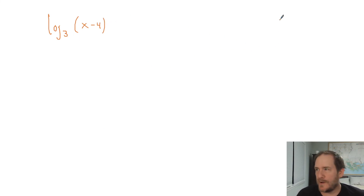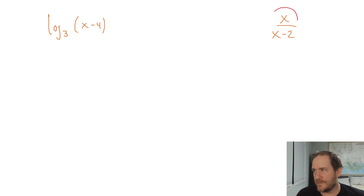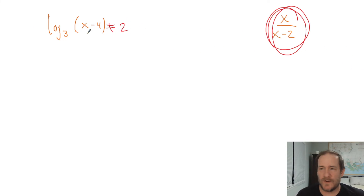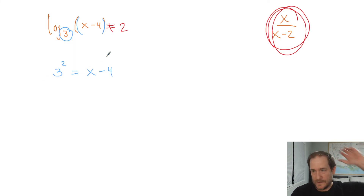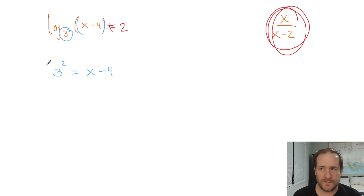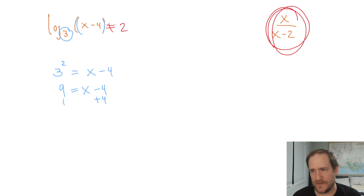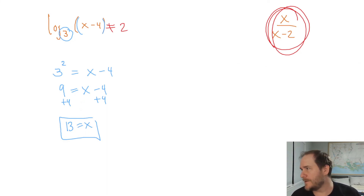Let me show you the proper algebra for a log in a composition. Say you have log base three of x minus four composed with a rational function x over x minus two. Two is the restriction on the rational function, so this log must never equal two. To solve a logarithm, convert it to an exponential: take the base, raise it to the power of the answer, and set that equal to the argument. So three squared equals x minus four — that's nine — and adding four gives x equals 13. So 13 is the bad value.